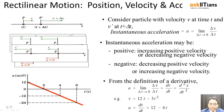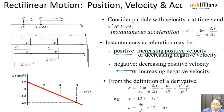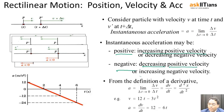The instantaneous acceleration can be either positive or negative. A positive acceleration corresponds to increasing positive velocity or decreasing negative velocity. A negative instantaneous acceleration corresponds to decreasing positive velocity or increasing negative velocity. In either of these cases, the instantaneous acceleration will be negative accordingly.